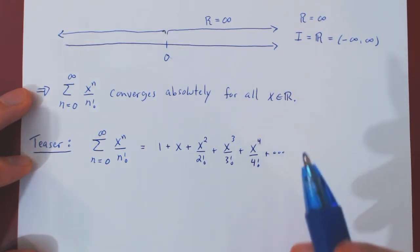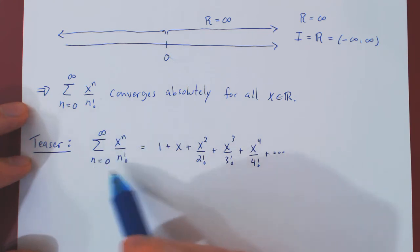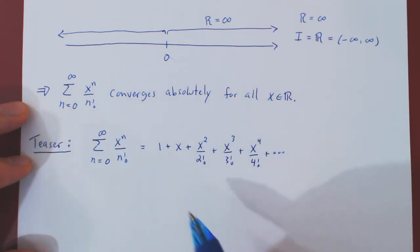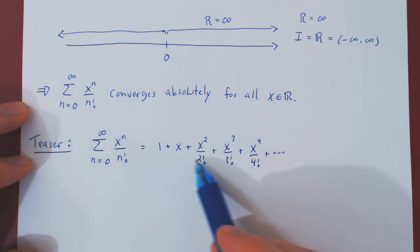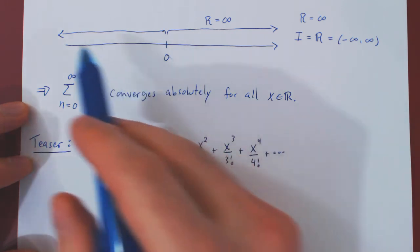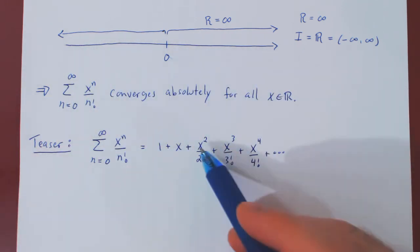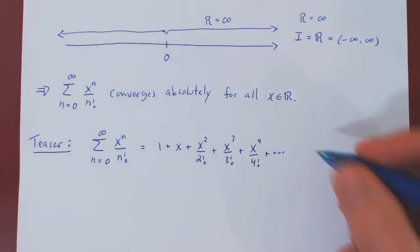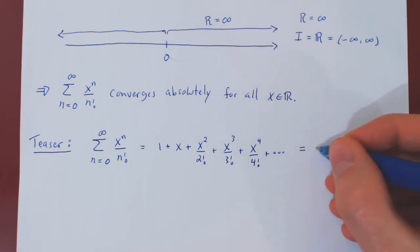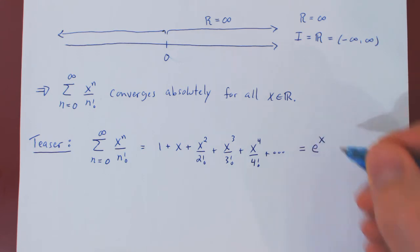We have just proved with the help of the ratio test that this power series converges for all values of x, and not only is this power series a function on the entire real line, this series is actually equal to, for all values of x, e^x, the natural exponential function.